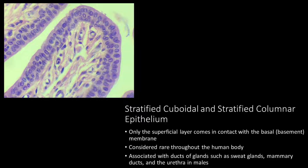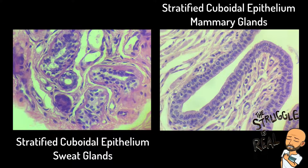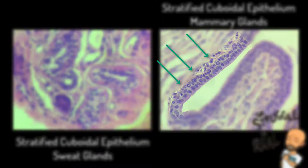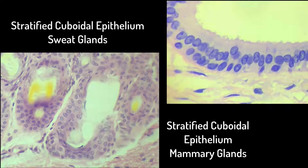Both of these epithelial cell types are less common within the human body. Stratified cuboidal epithelia can be found within sweat glands as well as the mammary ducts. Typically, stratified cuboidal epithelia are arranged in two layers, and are still associated with ducts and tubules within those structures.